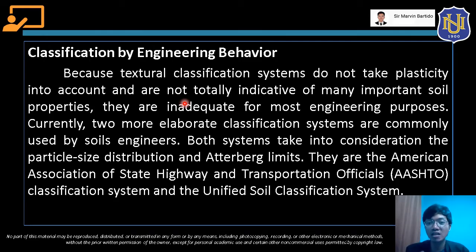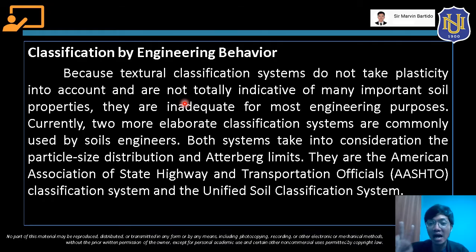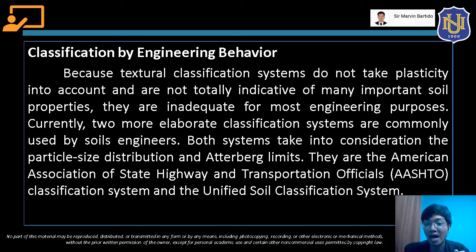Currently, two more elaborate classification systems are commonly used by soil engineers. Both systems take into consideration particle size distribution and Atterberg limits — which also cover the plasticity of soil. The two soil classification systems we will use are AASHTO, which stands for American Association of State, Highway, and Transportation Officials, and USCS, the Unified Soil Classification System. In this video, we will discuss AASHTO first.